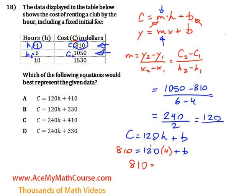So 120 times 4 is 480. We want to solve for b, so subtract 480 from both sides of the equation. Those cancel out. So 810 minus 480, that's 330. We can bring the b down. So that is essentially the c-intercept.